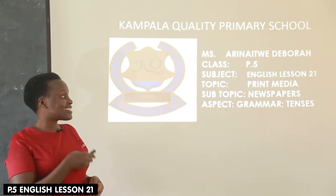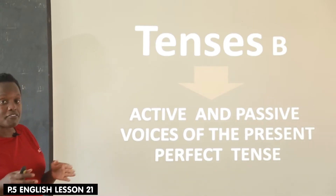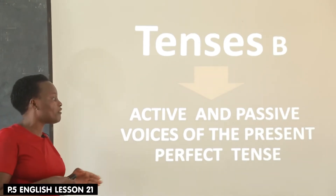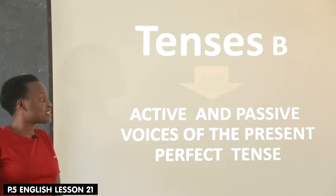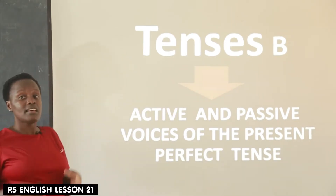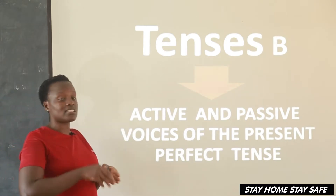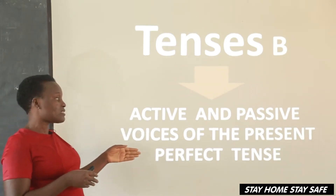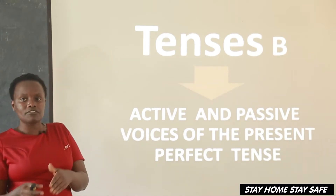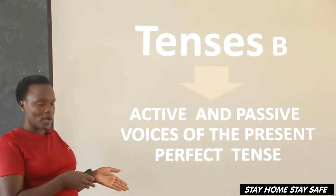Now let's continue with the lesson. We are still on the present perfect tense, but this time we are going to talk about the active voice and the passive voice. We are going to construct sentences in the active voice, then construct sentences in the passive voice, change sentences from active to passive, and also change sentences from passive to active.